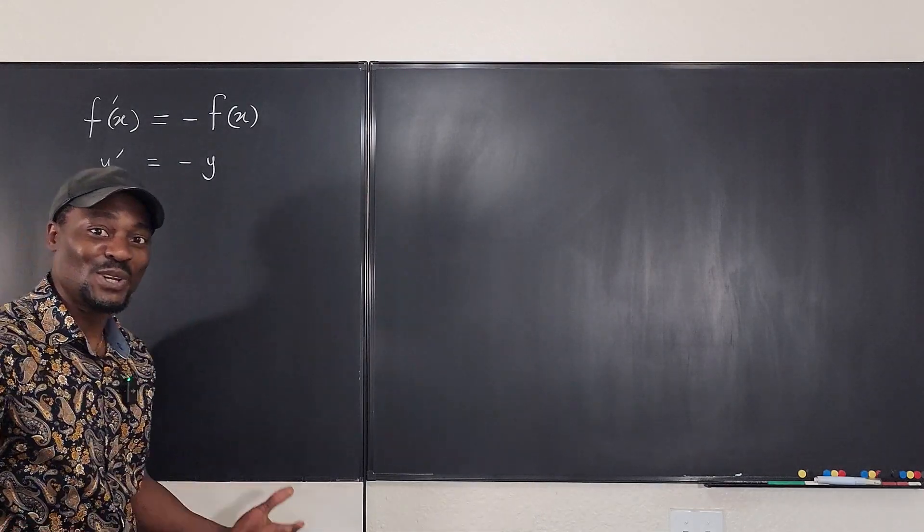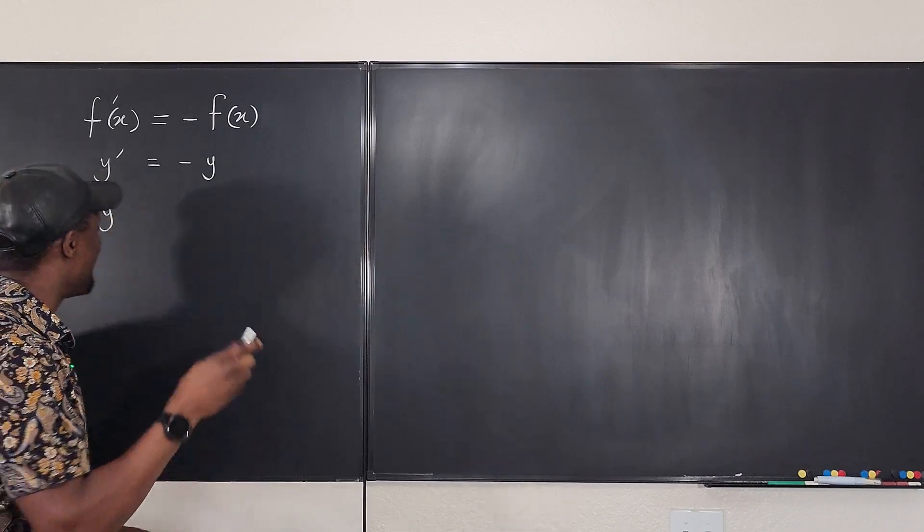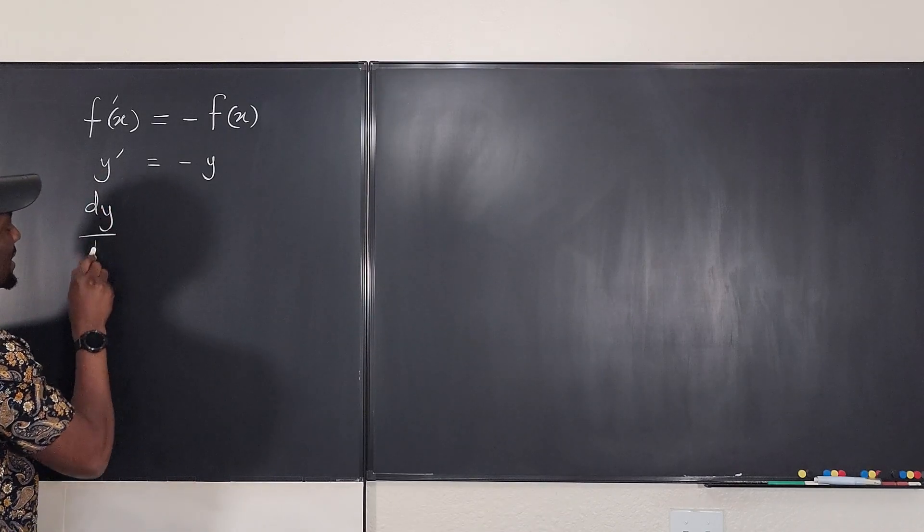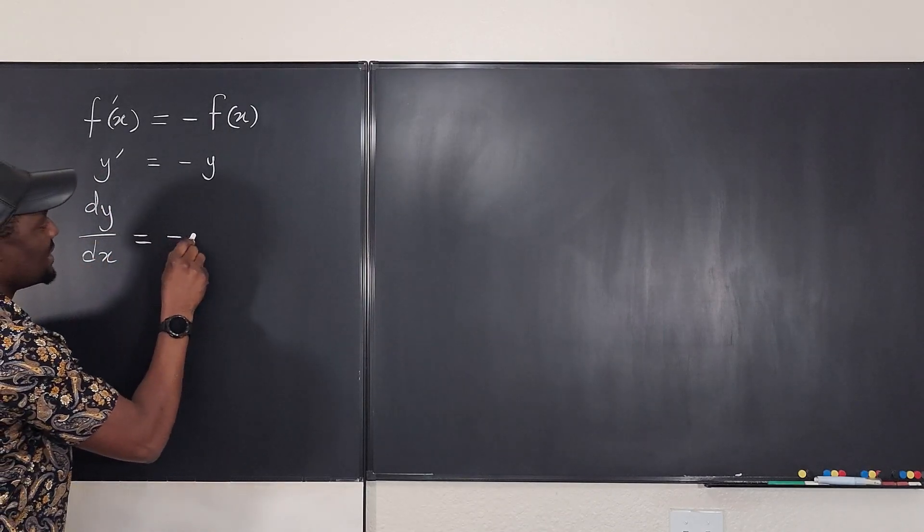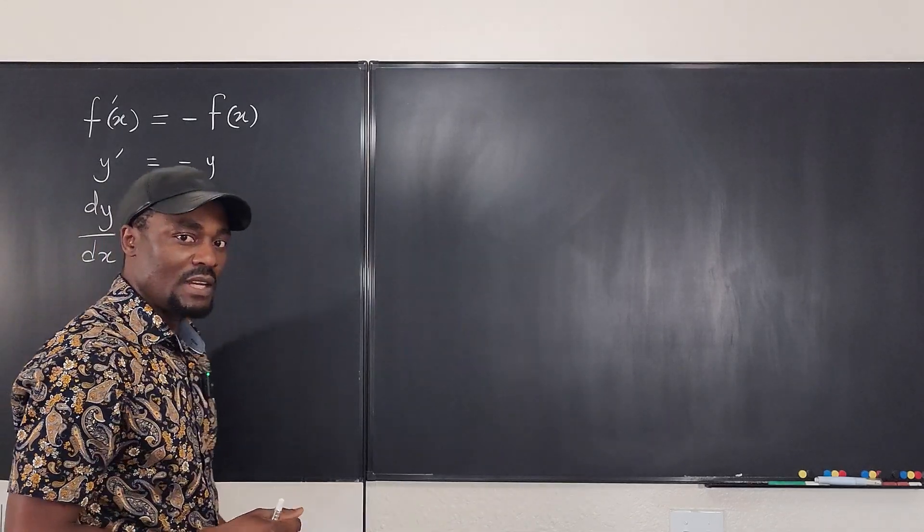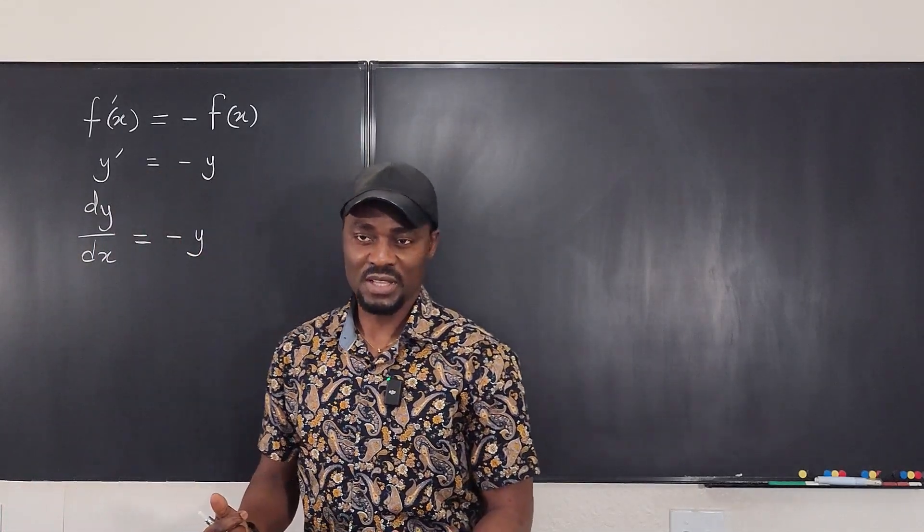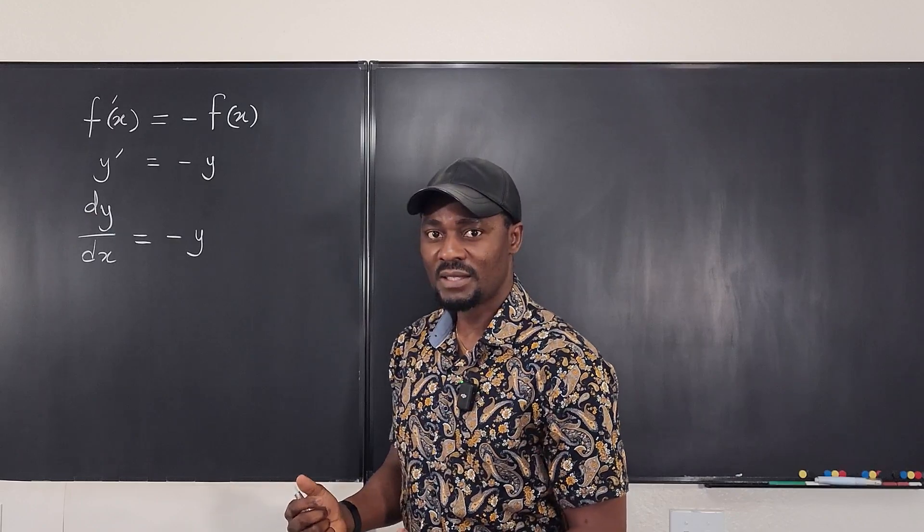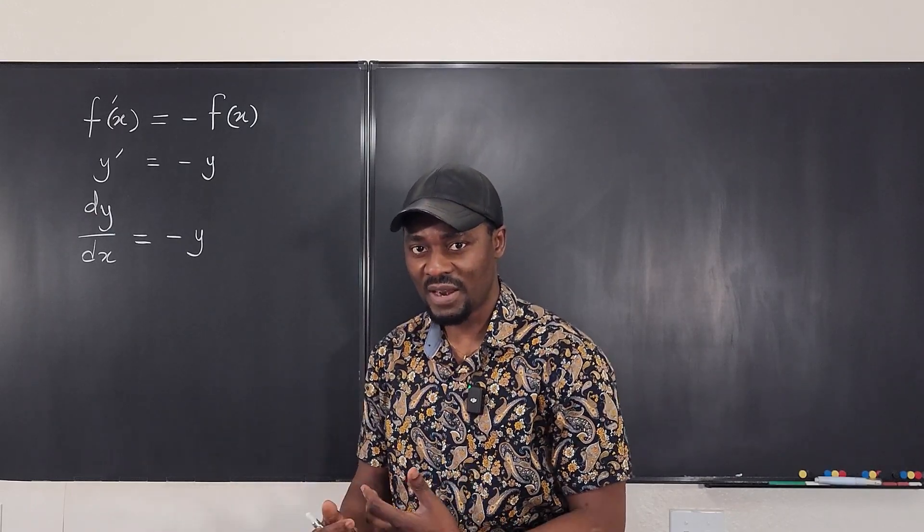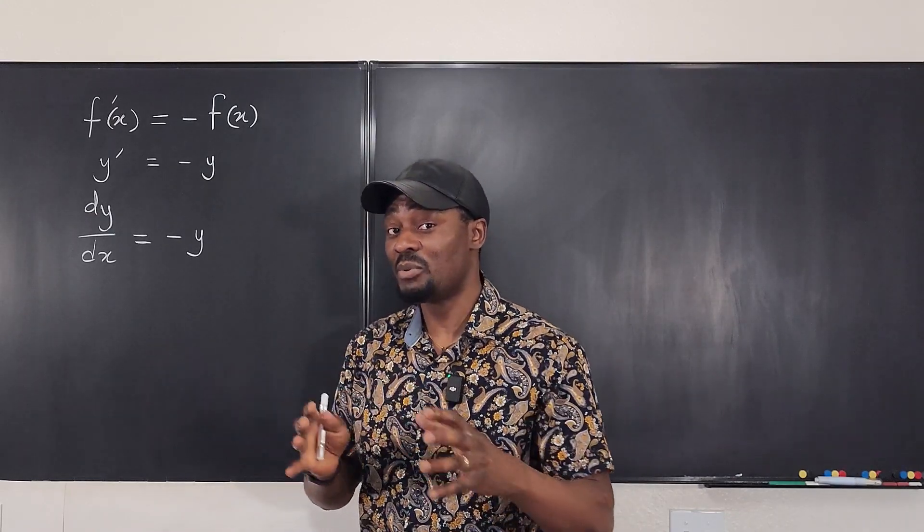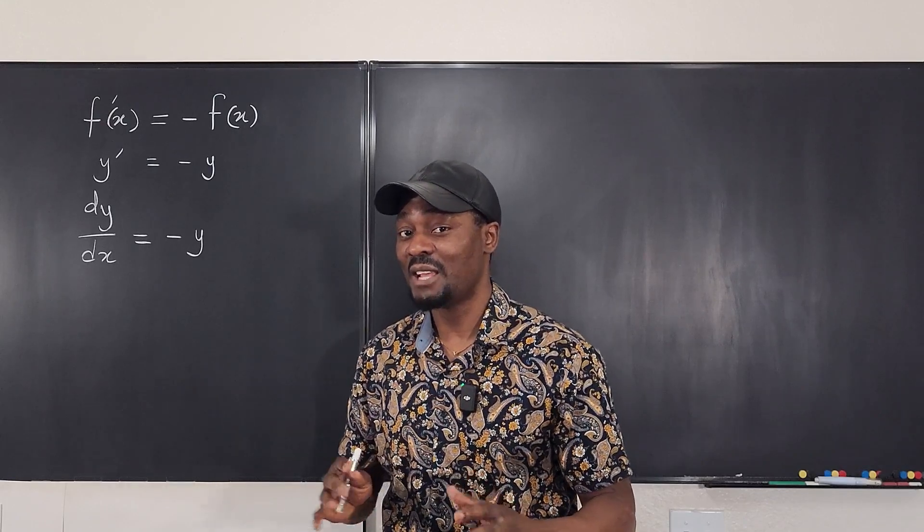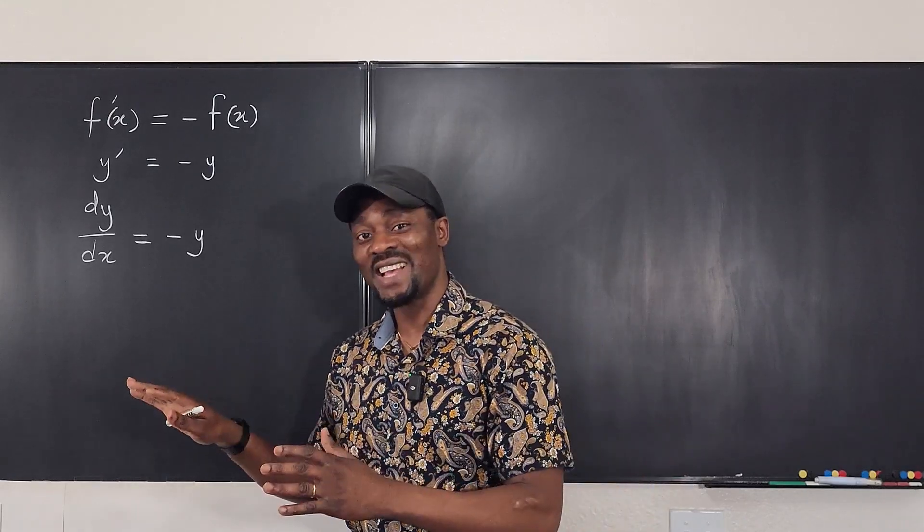So, because again, I can do a lot with y prime, but I can do so much with dy dx. So dy dx is negative y. Now, what kind of differential equation is this? This is a separable differential equation because I can separate the y from the x. I can put all the y's on one side, all the x's on one side.